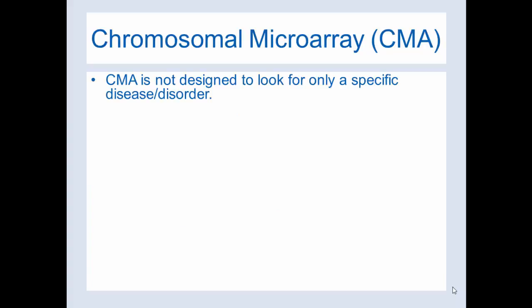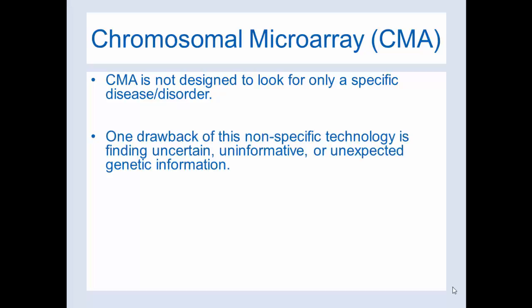Chromosomal microarray, abbreviated CMA. CMA is not designed to look for only a specific disease or disorder — it's a very broad technology. But one drawback of this nonspecific technology is finding uncertain, uninformative, or unexpected genetic information. Before doing a CMA, the geneticist usually has you sign a waiver saying that you understand the information found might not be specifically related to autism or developmental delay.